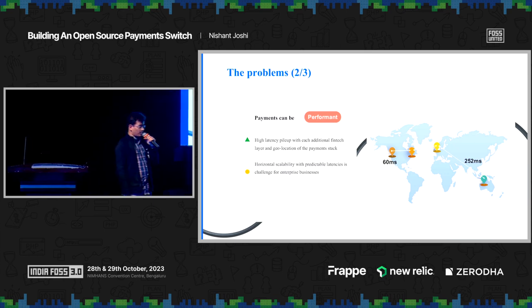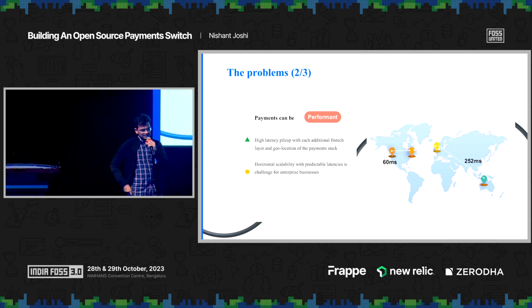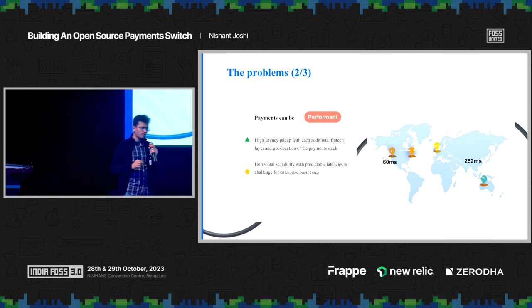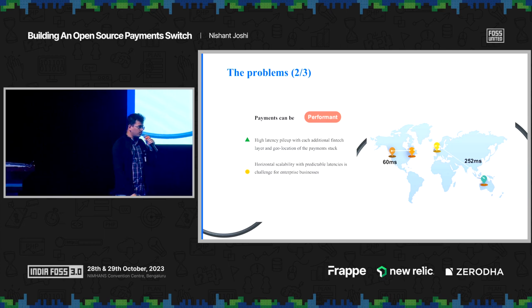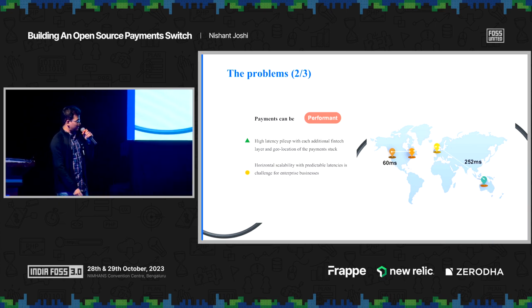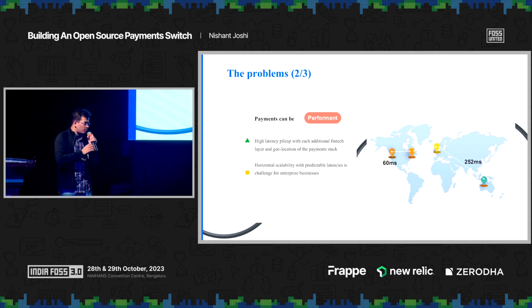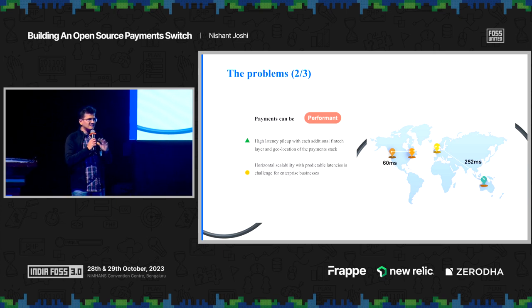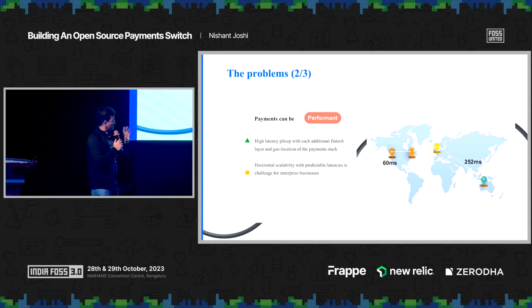Moving on, there's another problem we noticed: performance. If you are trying to do payments across countries, not only will you be incurring the overall network traffic between regions, but there could also be layers between them. If you're making a payment from one bank in one country to a different bank in a different country, they wouldn't directly support it — you might need some intermediate layer, which itself incurs a performance penalty and latency.